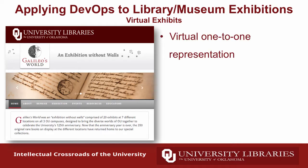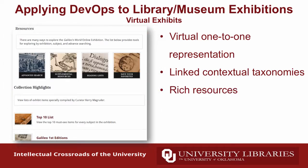Our first priority with exhibit sites is to build engaging user experiences. We want users to interact with the material and ultimately drive them to our physical space to see things in person. Our exhibit websites focus on having a one-to-one representation - if an item is on physical display, we want it represented on the website as an individual item. We want contextual rich taxonomies that link all items together so it's easier to browse and explore, and rich resources including open educational resources so this is not just a brochureware site.